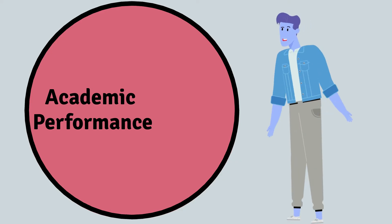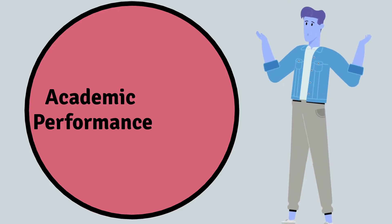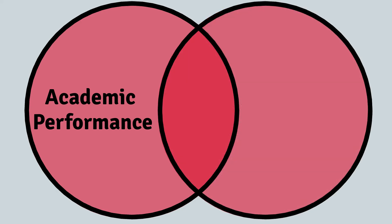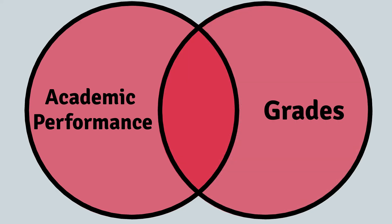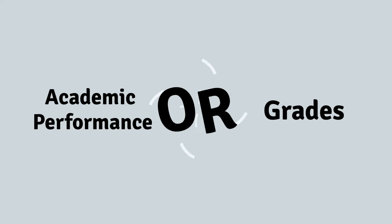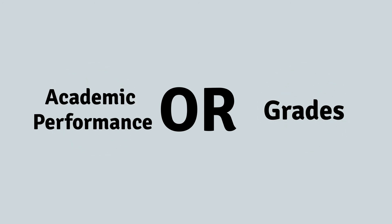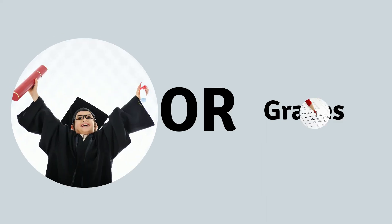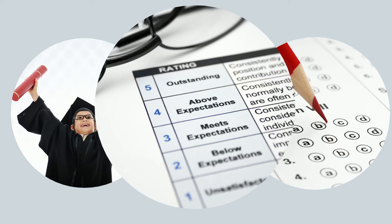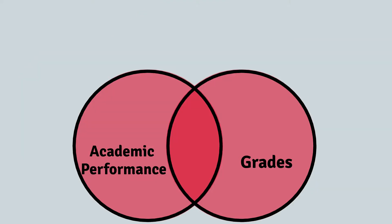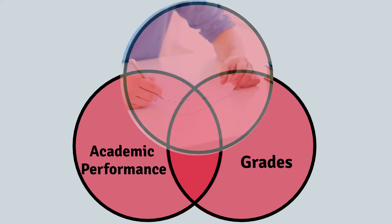But wait a minute — what if someone wrote a whole article about academic performance but they only use the word grades? We'd better add that word too. We use OR to connect different words that mean similar things. Academic performance and grades are not the exact same, but they are similar. For example, we could add marks too.